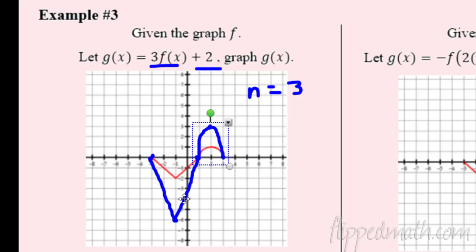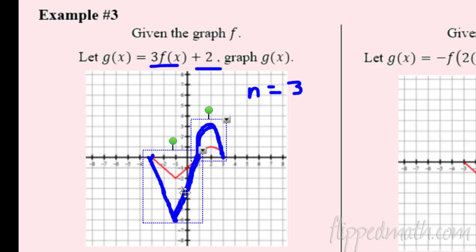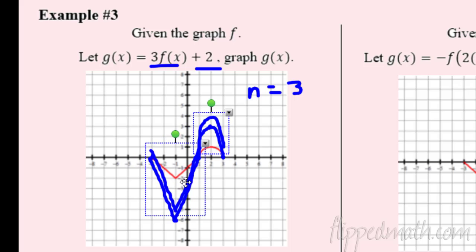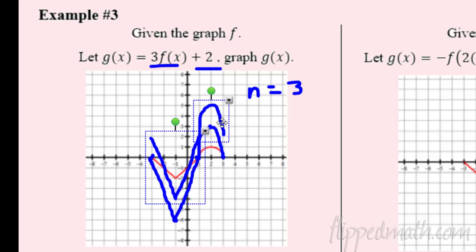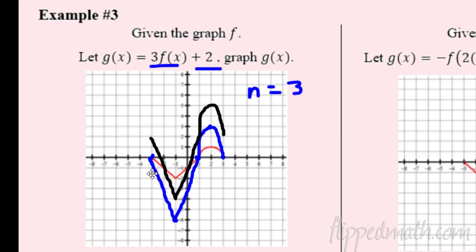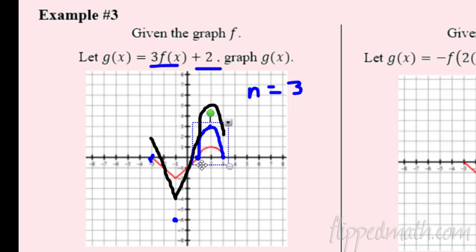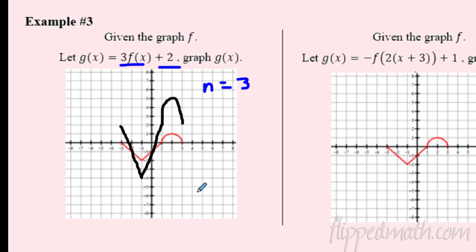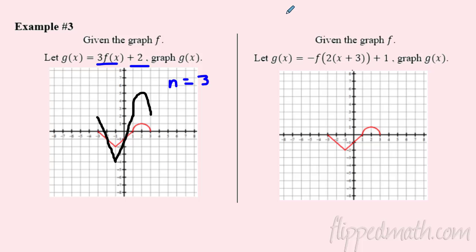After stretching, I copy that shape and shift it up two spaces — that gives the final image. I'll change the color so the final transformed image is clear. So to summarize: I stretched it by a factor of three and then moved it up two. That's how we combine a vertical dilation with a vertical translation.